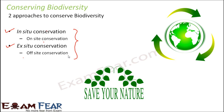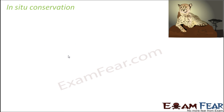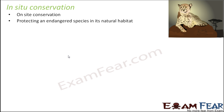In-situ conservation means protecting an endangered species in its natural habitat — on-site conservation. Where the animal naturally exists, we try to protect it there without relocating or transferring it. We protect that entire area so that no harm is caused to the animals or that particular area. That particular area is then called a protected area.